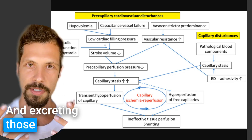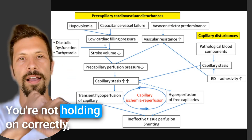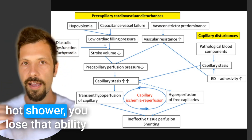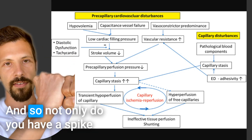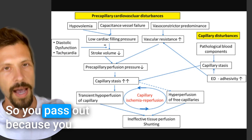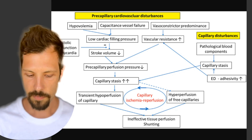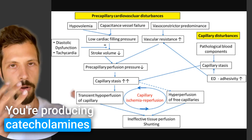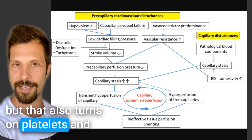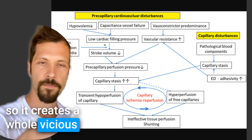Your body reacts to that poor constriction by producing catecholamines that activate beta-adrenergic receptors. Those catecholamines are signaling blood vessels to constrict. If you're not holding on to blood volume correctly — especially during something vasoadaptive like getting into a hot shower — you lose the ability to vasoconstrict. So not only do you have a spike in catecholamines, but you also have the vasodilatory properties of heat, and you can pass out from loss of blood pressure as it leaks into tissue. Producing catecholamines also activates platelets, which have beta-adrenergic receptors, causing more clotting and creating a vicious feedback cycle.